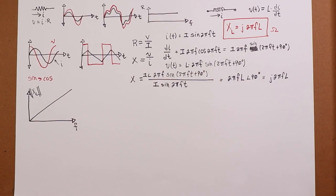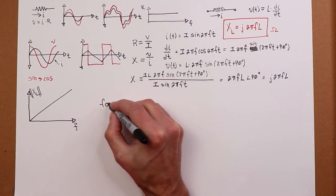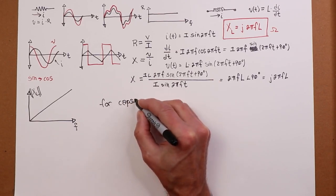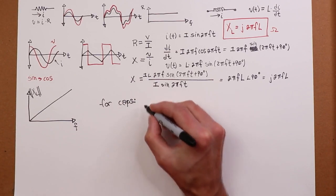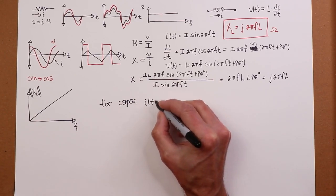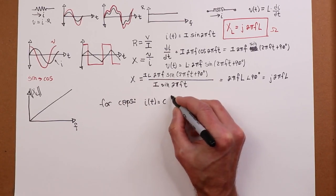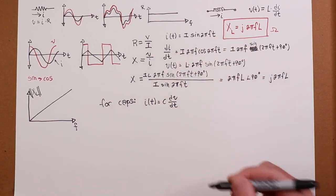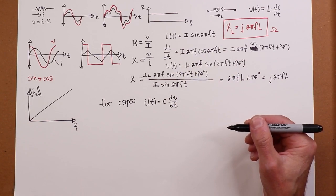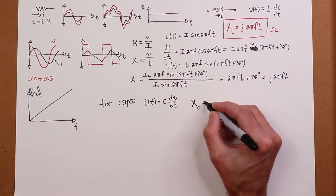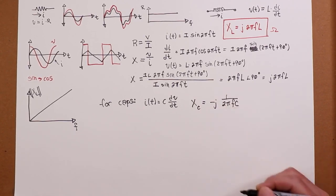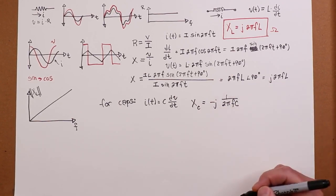All right, now, if we did the same thing for a capacitor, we would use the equation I is equal to C dV dt, and we would go through this same build, and what you would discover is that your X sub C would be equal to minus J 1 over 2 pi F C. So now we have a reciprocal arrangement.